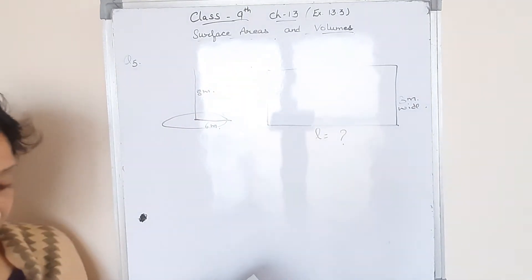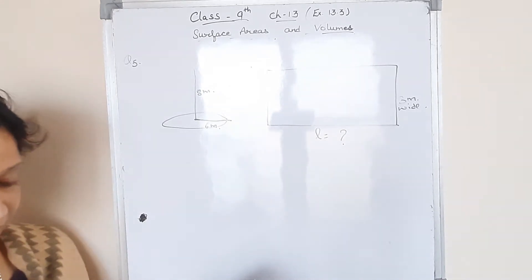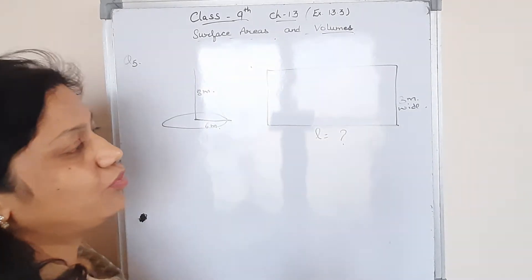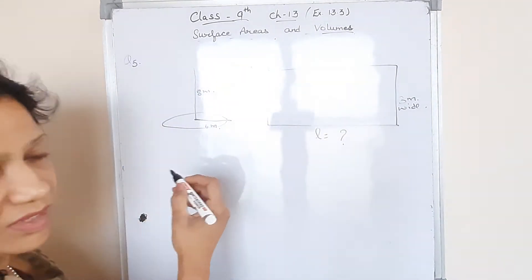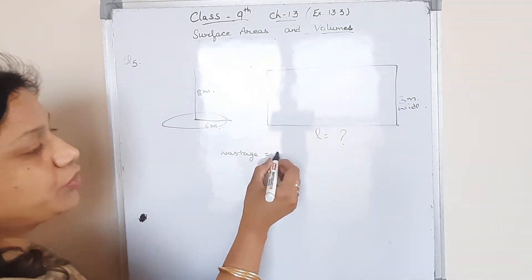Then he is saying assume that the extra length of material that will be required for stitching margins and wastage in cutting is approximately 20 centimeter. As we know very well that wastage is always there. So he is saying that the wastage will be there 20 centimeter.